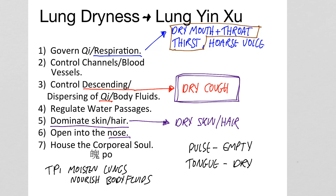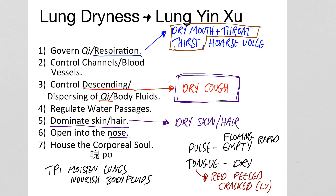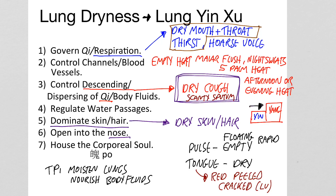If the lung dryness becomes deeper and becomes lung yin deficiency, a few things change. As well as empty, the pulse becomes floating, empty, and rapid, and the tongue becomes red, peeled, and possibly cracked in the lung area. The dry cough can develop a bit of scanty sputum which is difficult to get out.